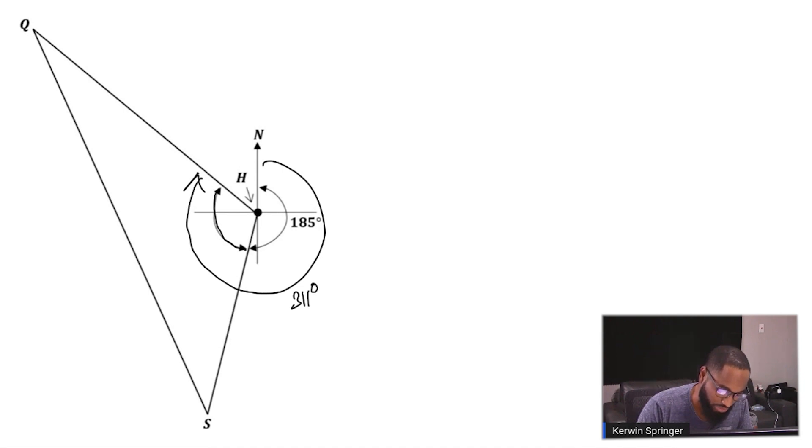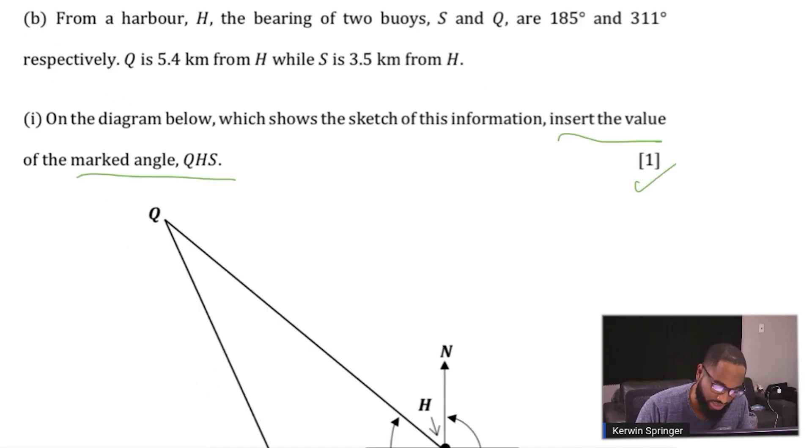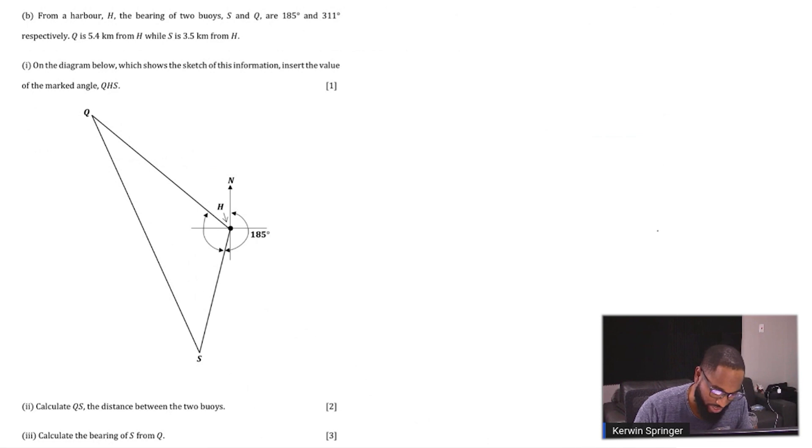We'll do a little subtraction, so angle QHS is equal to 311 degrees minus 185 degrees, and we end up with 126 degrees. That's one mark. It's looking good, it's sounding good. 126 degrees, let's get the remaining five marks.